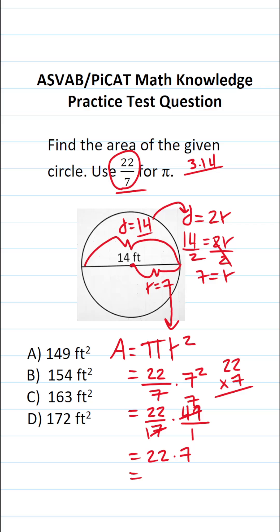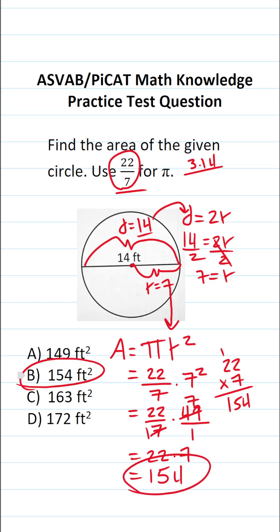So as not to make a mistake, working this off to the side: 7 times 2 is 14, carry 1; 7 times 2 is 14, plus 1 is 15. So we can see that the area of our given circle is B, 154 square feet.